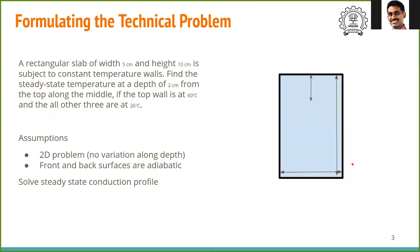The technical problem is stated like this. A rectangular slab of width 5 cm and height 10 cm is subject to constant temperature walls as shown in the figure. Find the steady state temperature at a depth of 2 cm from the top along the midline. The top wall is at 60 degrees and all other three walls are at 26 degrees centigrade.